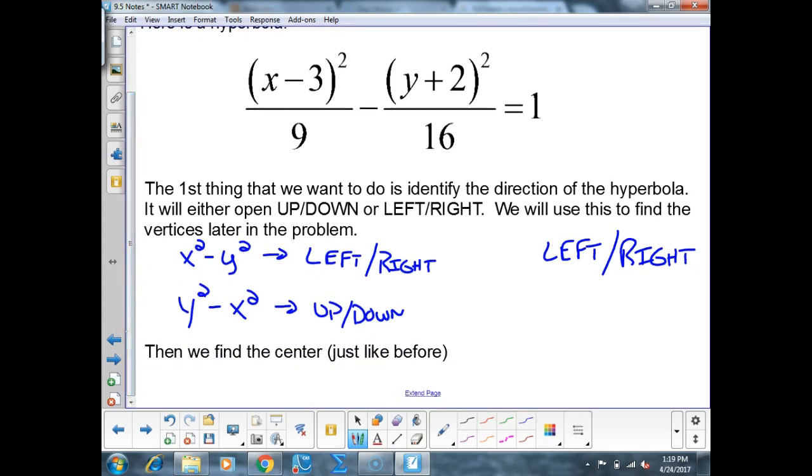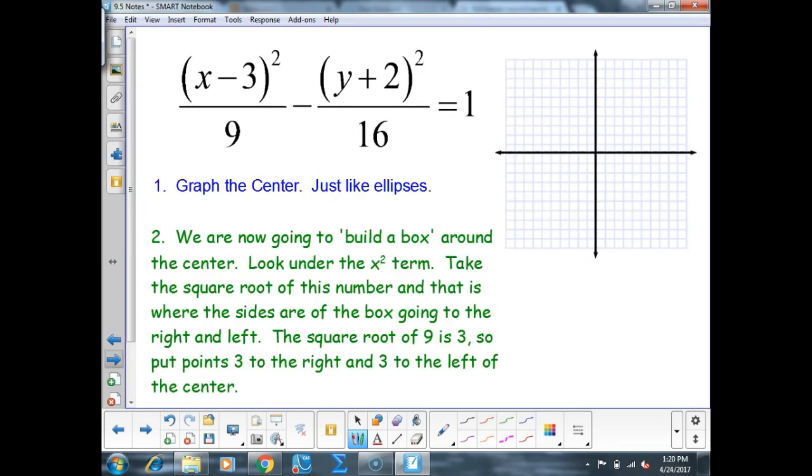Step one: the whole part of step one is figure out which way it opens and find the center. Find the center just like we have been finding the center all along. What is the center of this hyperbola? Three comma negative two. We think opposite just like we have been for the last three weeks. The center of this hyperbola is at the point three comma negative two. When we go to the graph, we would put that center as a C right on our graph.